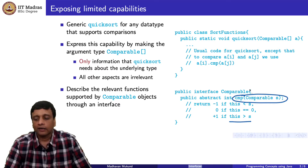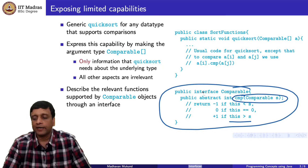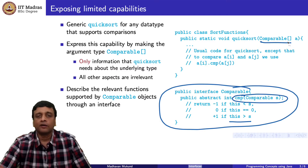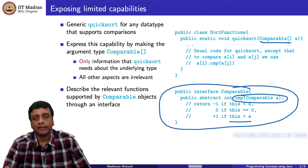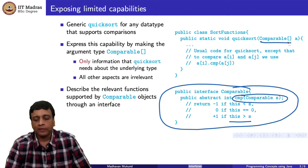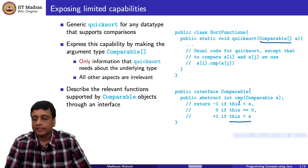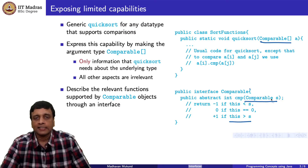The idea is that you define the property of being comparable through an interface, then use that as the data type for the function that uses this property. When I pass any array to quicksort, all I have to do is ensure it maintains that interface. This is the key capability of an interface — it defines a capability in terms of the function that must be implemented, giving you the signature: a function that takes another Comparable object and returns an int.